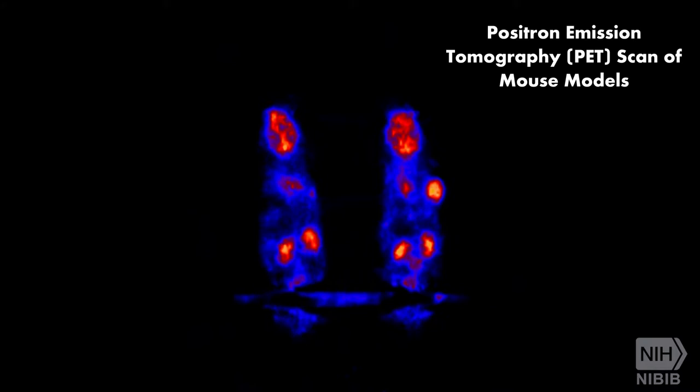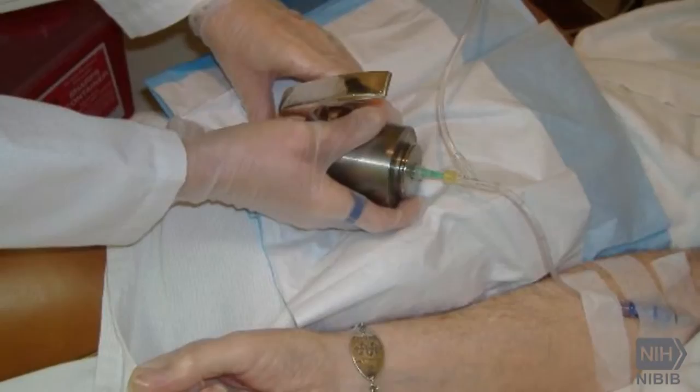A PET scan creates 3D images of the body. It does this by using radioactive tracers, which are usually administered to a patient through intravenous injection.